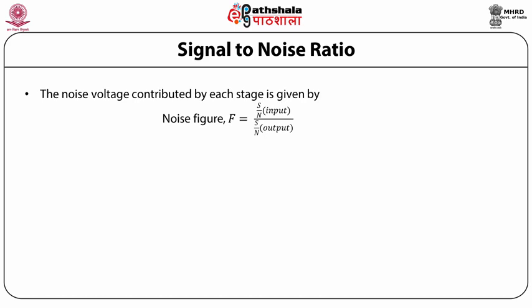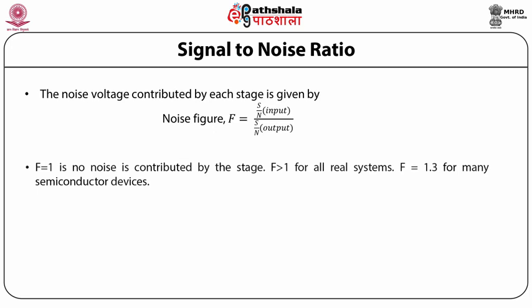The noise voltage contributed by each stage is given by the noise figure F, which is equal to S/N input divided by S/N output. When F is equal to 1, there is no noise contributed by this stage. F is greater than 1 for all real systems, and F is approximately 1.3 for many semiconductor devices.